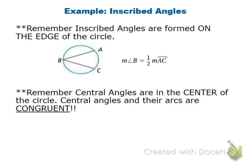Inscribed angles: remember that an inscribed angle has its vertex on the edge of the circle. Looking at point B on this graph, the angle is eating the arc in front of it. To find the arc, you double the angle. To find the angle, you cut the arc in half. Central angles — angles that happen in the center of the circle — are equal to the arc, not half.